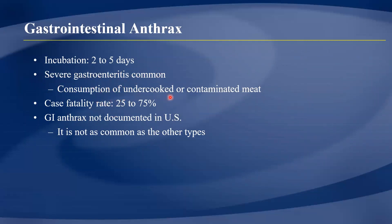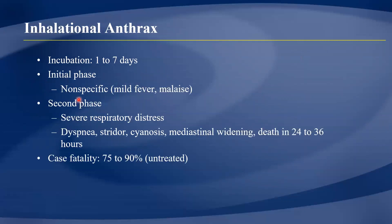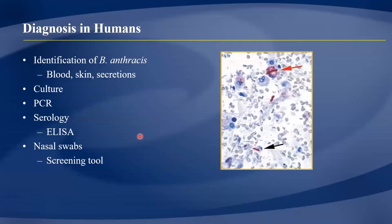Inhalational anthrax has an incubation period of one to seven days. The first phase is non-specific, with fever and malaise, but it progresses to severe respiratory distress and death. Case fatality is 75–90% if untreated. Diagnosis involves finding the bacteria through blood or skin samples using culture, PCR, or serological tests such as ELISA.